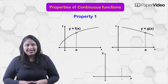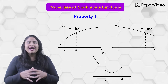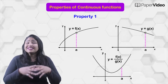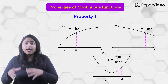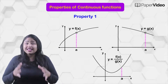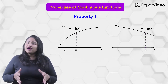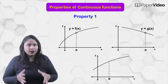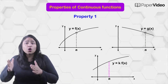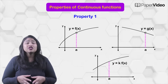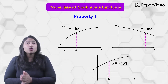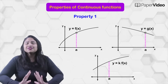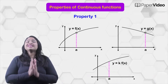The function f upon g is continuous at x equals to a, which means the quotient of the functions is continuous at the same point both functions are continuous individually. The function kf is continuous at x equals to a, where k is a real constant, which means a function made by multiplication of a constant with a continuous function is continuous at the same point.